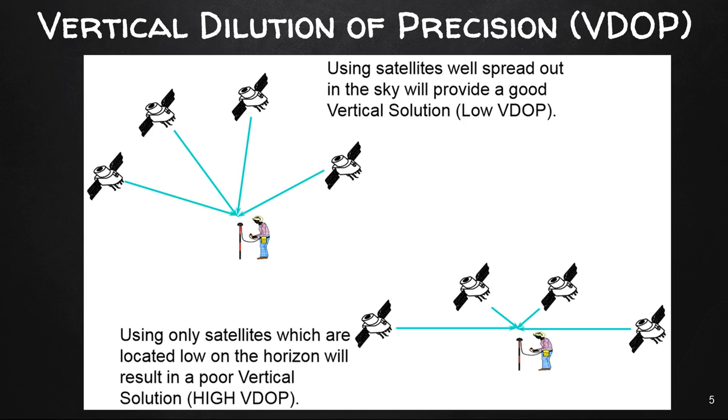For vertical dilution of precision, using satellites well spread out in the sky provides a good vertical solution. You're going to have a low VDOP. And if your satellites are very low, you're going to have a very high VDOP, which is going to provide you with poor positioning for your points that you're collecting.